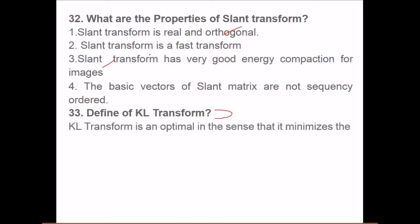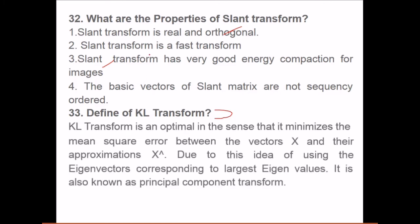Define KL transform. KL transform is optimal in the sense that it minimizes minimum square error between the vector X and their approximation. Actually we find the variances, and depending on the variances we find the eigenvector corresponding to largest eigenvalues. It is also known as principal component transform.